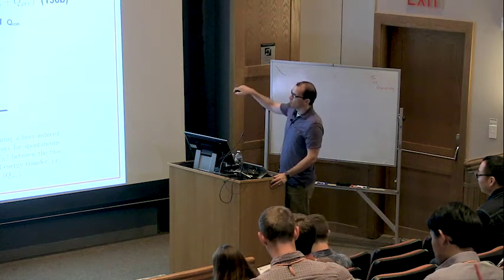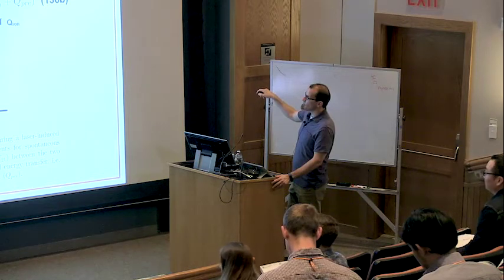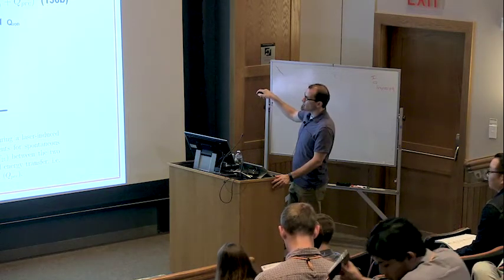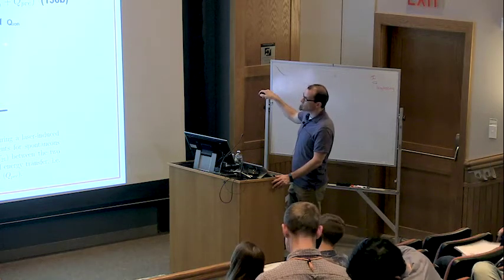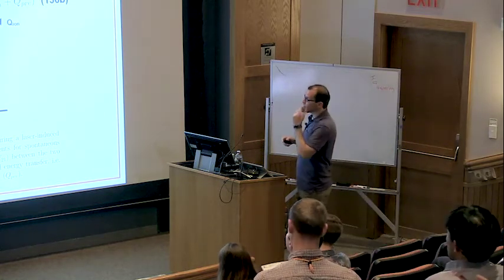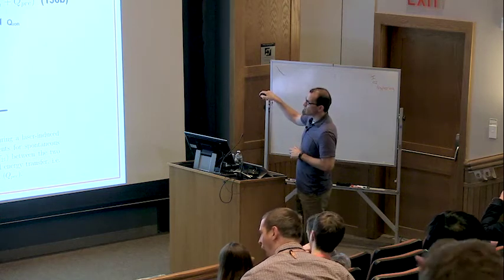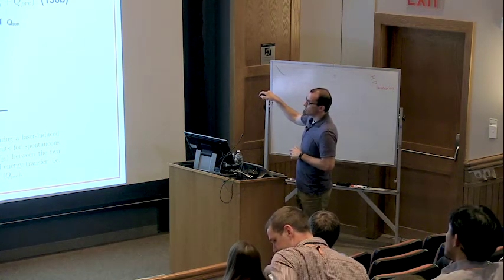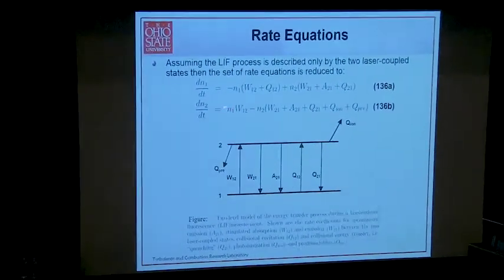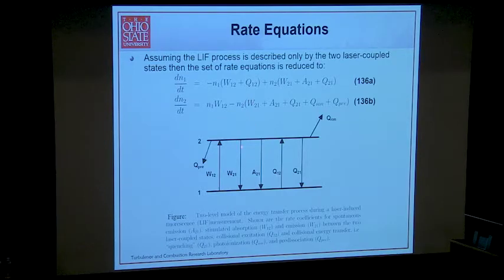Right now we have this generic expression of some state one and two. Hopefully it's clear that for whatever state we have, we have population metric terms and depopulation terms. For N2, we assume initially there's no population in state two. We can see that the only way we populate state two is through something coming from state one — that's the number density, whatever pool we have to pull from — and then the absorption rate. We can lose by spontaneous emission back down, stimulated emission from two to one, and quenching and ionization predissociation.